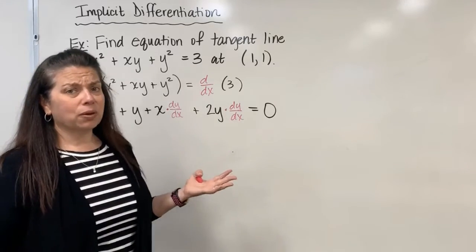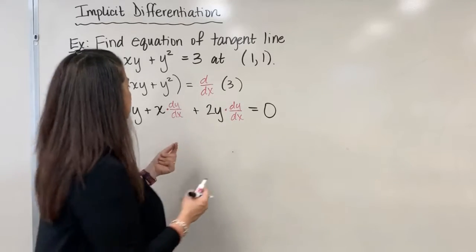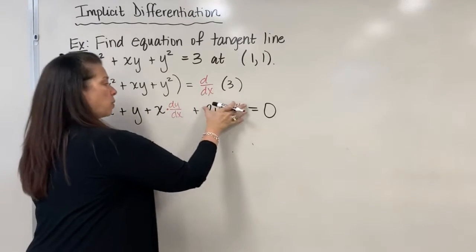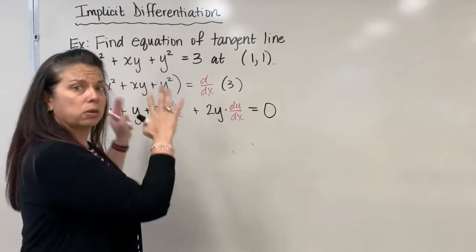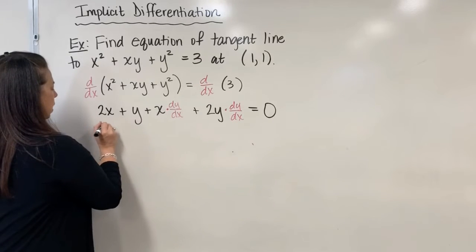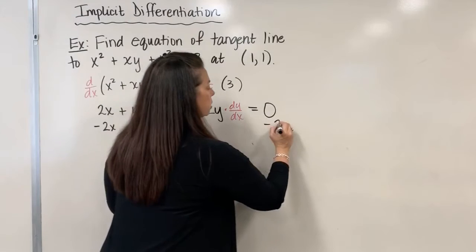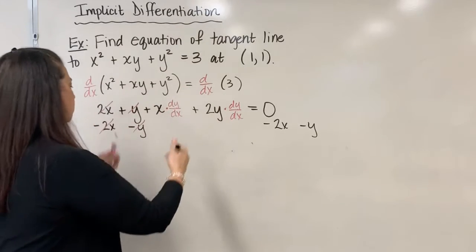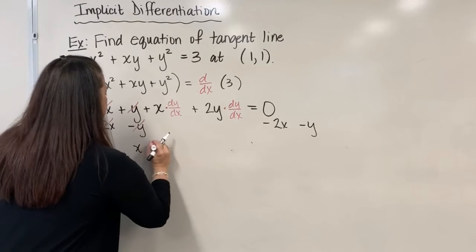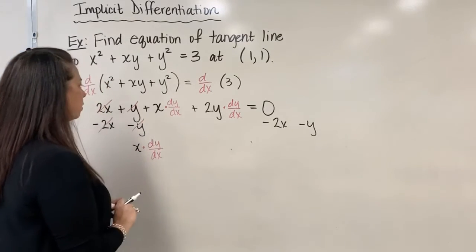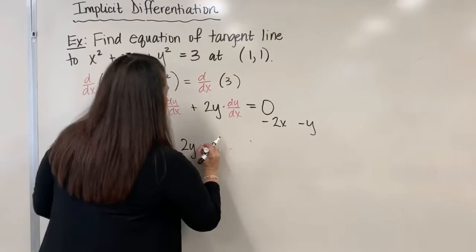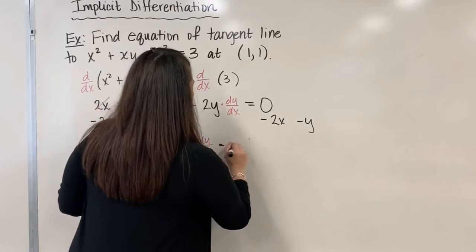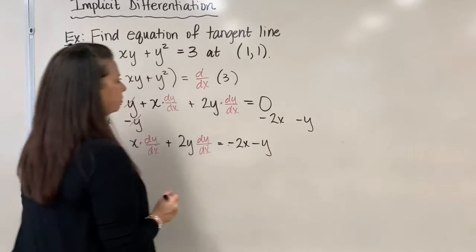Now comes algebra steps to solve for dy/dx. The dy/dx is attached to the x·(dy/dx) term and the 2y·(dy/dx) term, but the 2x and y terms do not have a dy/dx. So we subtract 2x and subtract y from both sides. On the left we have x·(dy/dx) plus 2y·(dy/dx), and on the right we now have negative 2x minus y.